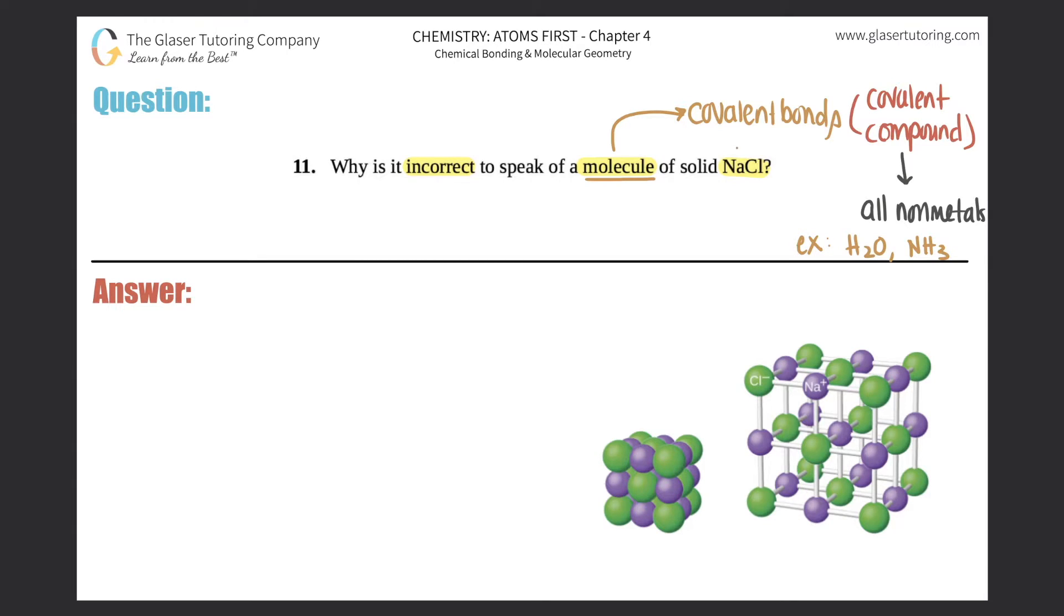However, if you look at NaCl, which is table salt, it's just a fancy way of saying table salt, salt that we use for everything. I love salt. We see that we have sodium and we have chlorine. Sodium, if you guys look on the periodic table, sodium will be a metal. It will always be a metal and chlorine is the nonmetal.